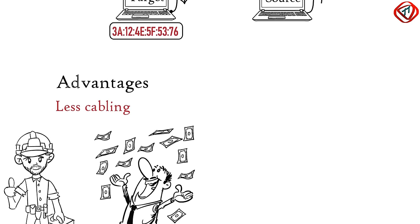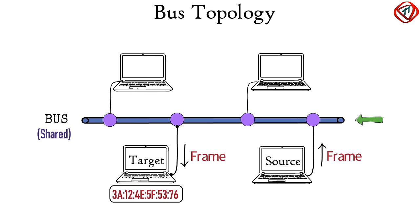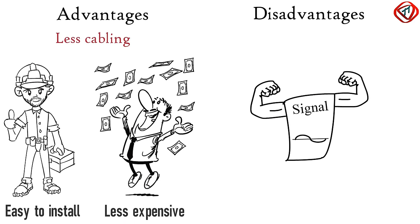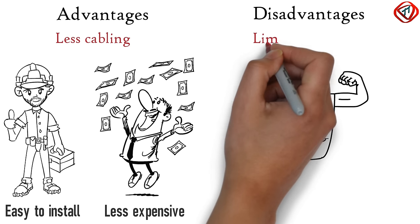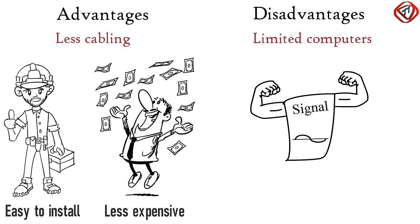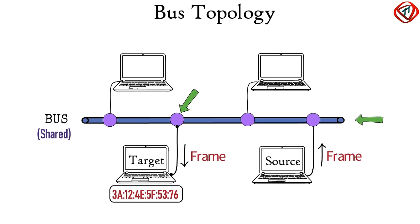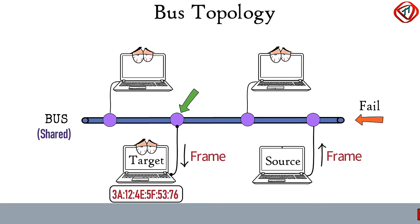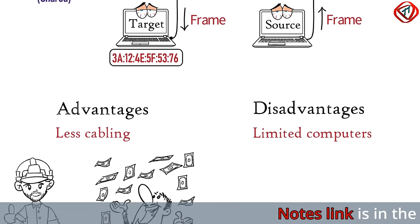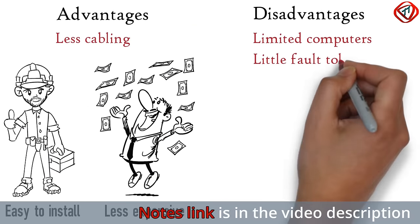However, with the increase in the length of the central cable and the increase in the count of taps, the strength of the signal decreases. So only a limited number of computers can be connected in bus topology. In this topology, all computers depend on the central cable for data frame transmission, so if the central cable fails, it paralyzes the whole network. That is, bus topology has very little fault tolerance.